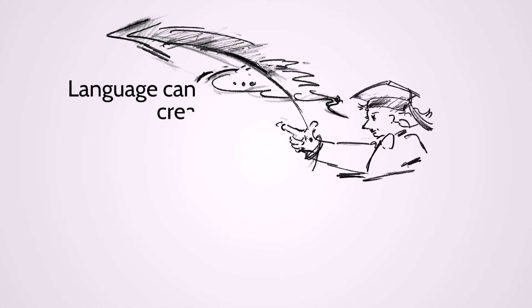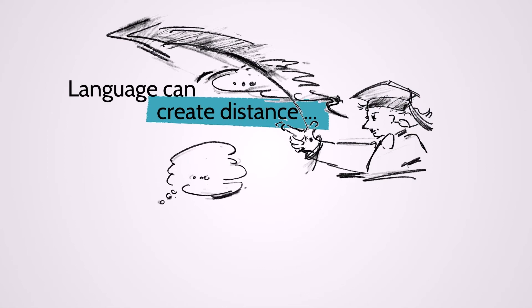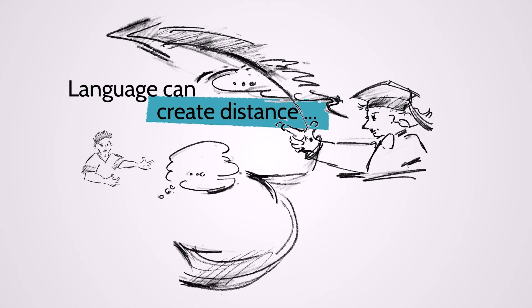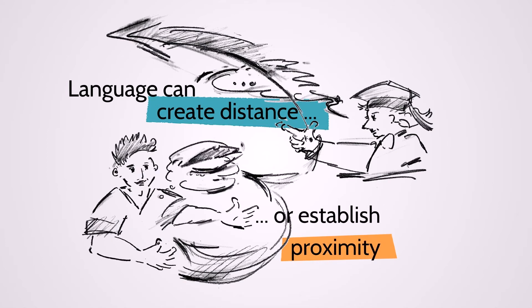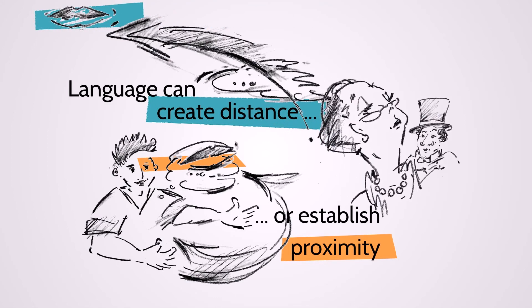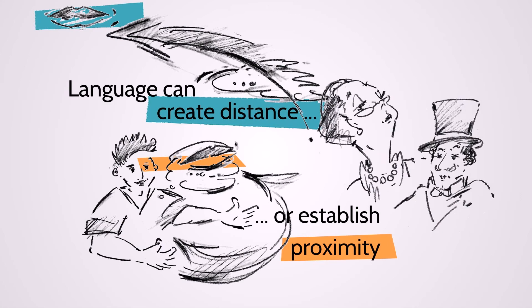Academic language can demonstrate expertise and create distance. Colloquialisms and dialects can establish proximity. While a southern drawl with its inclusive y'all sounds laid-back and friendly, the received pronunciation of the Queen's English can sound more educated, privileged, and perhaps even snobbish.